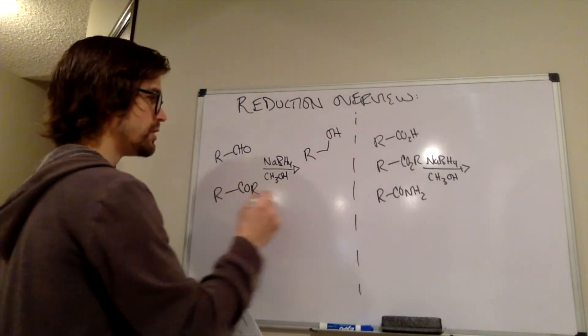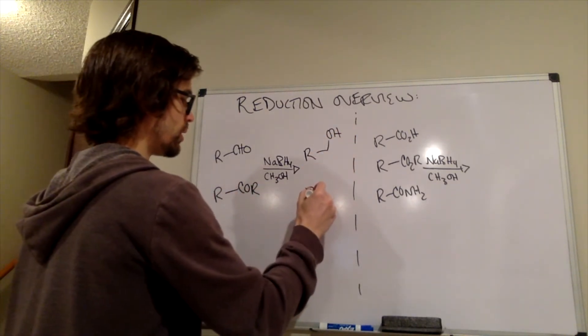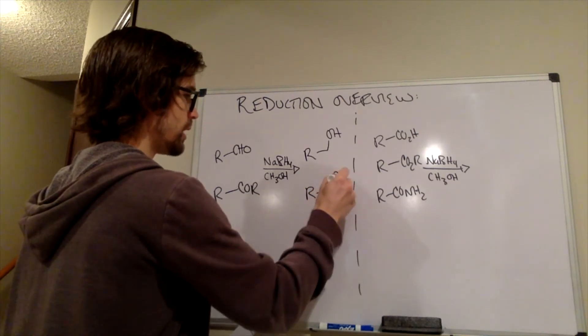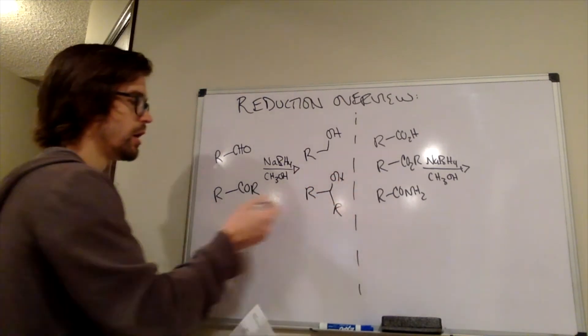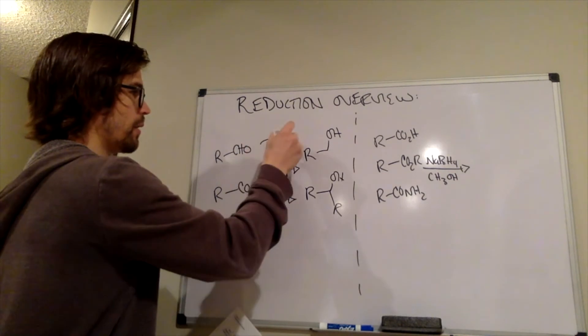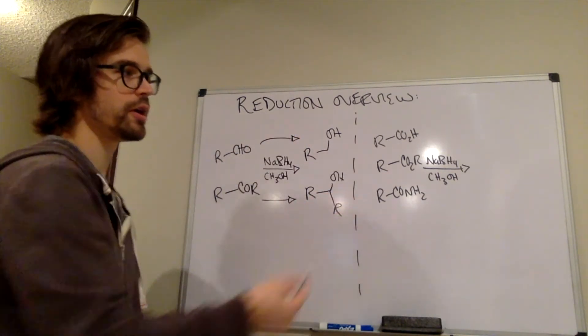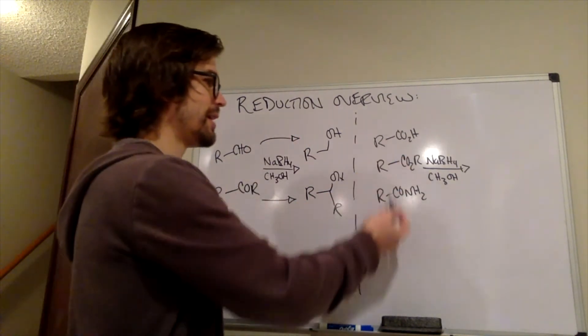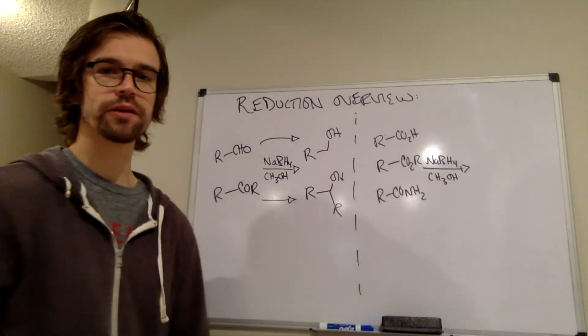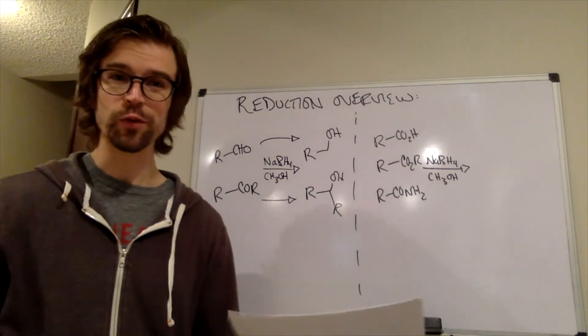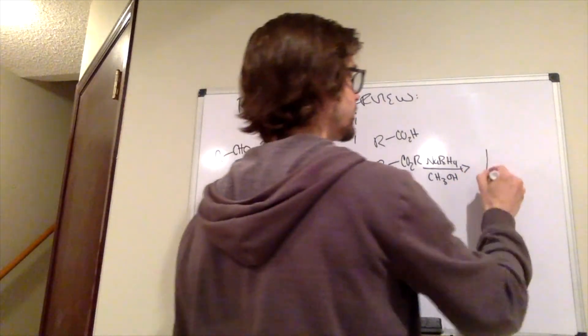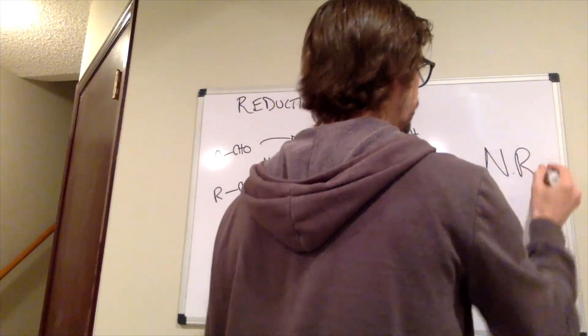The ketones would turn into secondary alcohols. So that went to that, that went to that. And what about here? What happened here? Remember with these less reactive carbonyl derivatives, sodium borohydride is just too weak of a reductant. So all of these proceed to give no reaction.